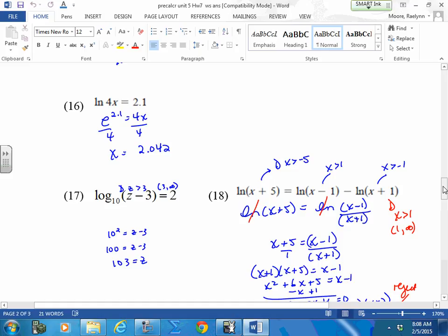And again, you have only one log here, so you need to flip this. The base of an ln is e. So don't forget, put the e, just like you would do a base 10. Put the 10. So e to the 2.1 is equal to 4x. Just divide by 4, put that in your calculator.